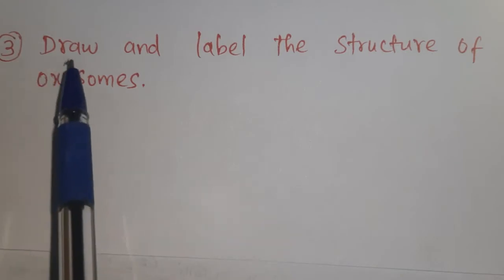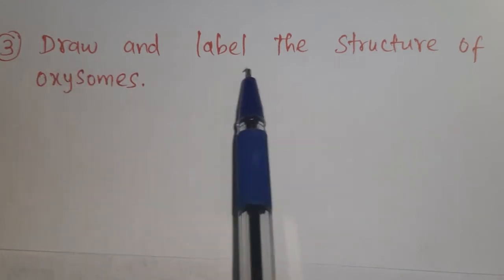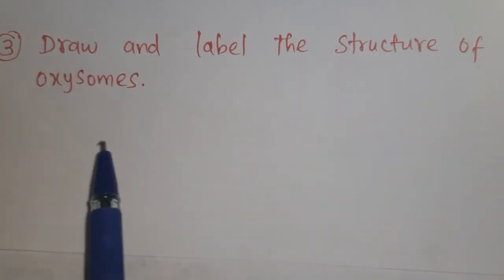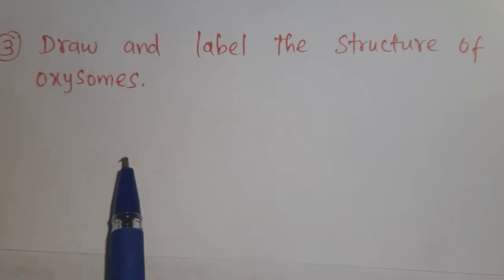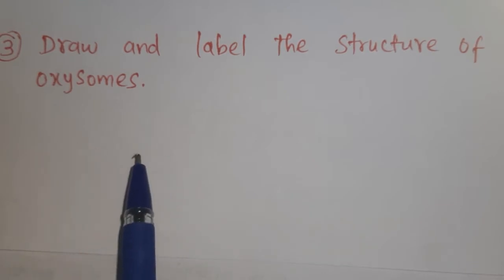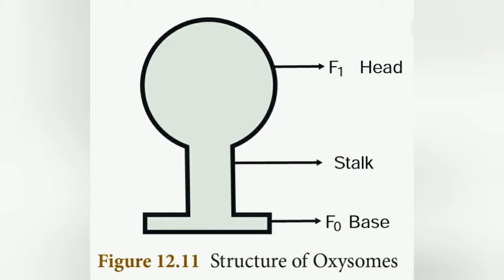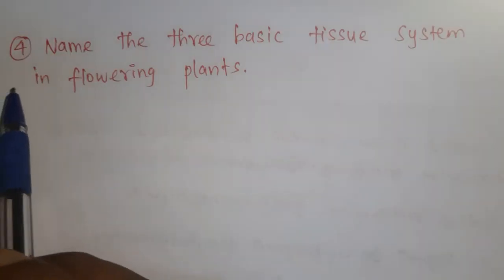Question number three: draw and label the structure of oxysomes. Oxysomes are particles present in the cristae of the mitochondria. The upper portion is the F1 head, the middle portion is the stalk, and the lower portion is the F0 base.